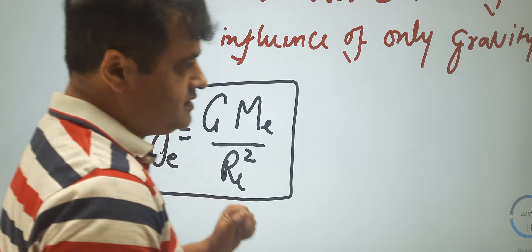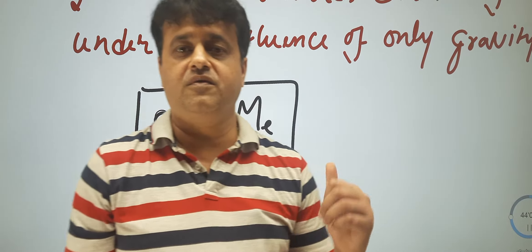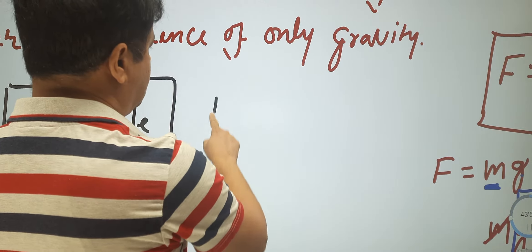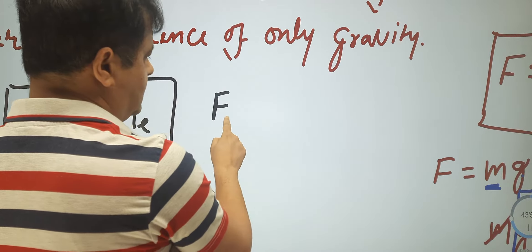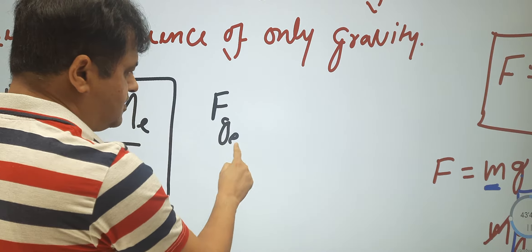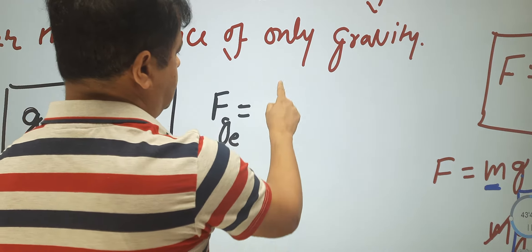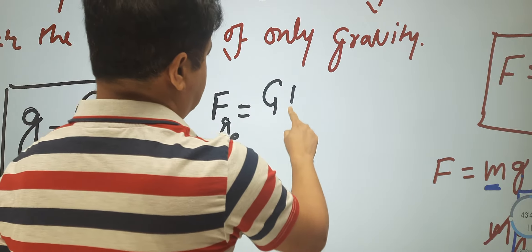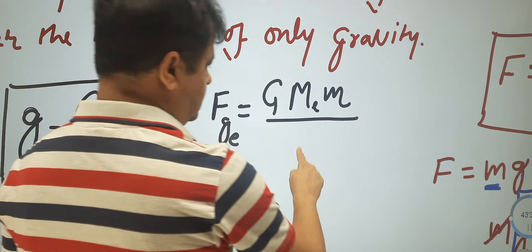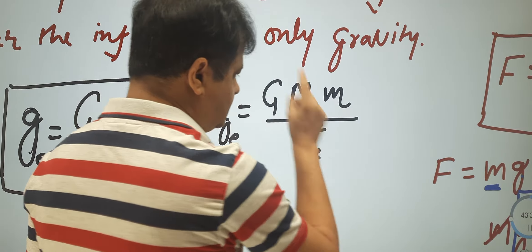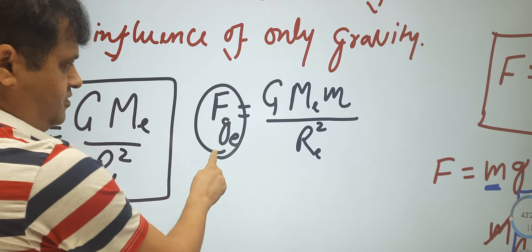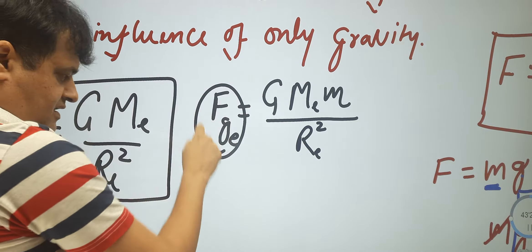This is what we learned yesterday, and where did this formula come from? It came from Newton's universal law of gravitation. The gravitational force of earth is equal to G times mass of earth times mass of the object placed on the surface of earth, divided by the radius of earth squared.